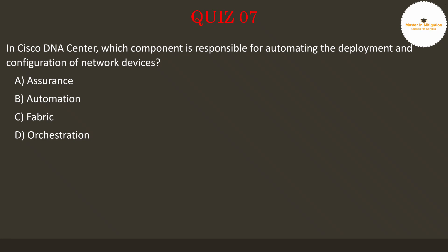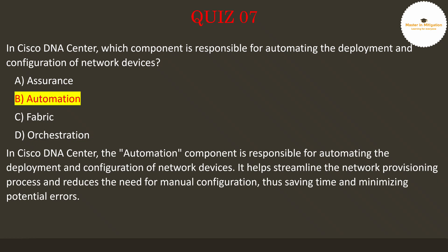The answer is B. Automation. In Cisco DNA Center, the Automation component is responsible for automating the deployment and configuration of network devices. It helps streamline the network provisioning process and reduces the need for manual configuration, thus saving time and minimizing potential errors.